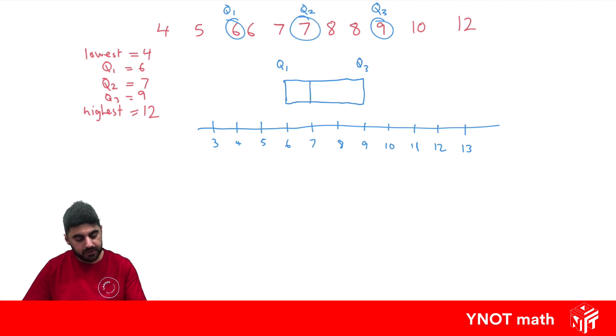Then we draw a little dash at our lowest point, so 4, and a little dash at our highest point, which is 12. And we connect them to our box. And now we've drawn our box plot.